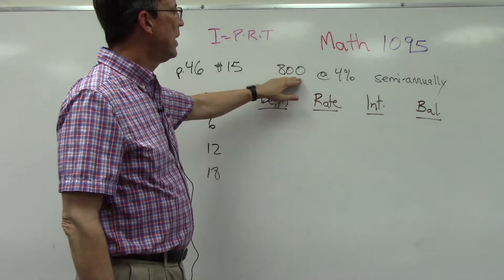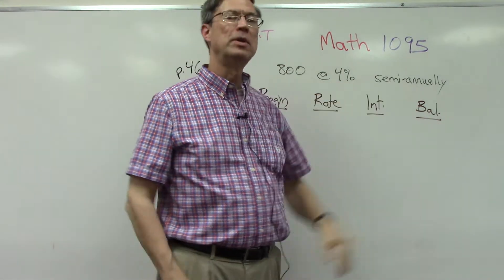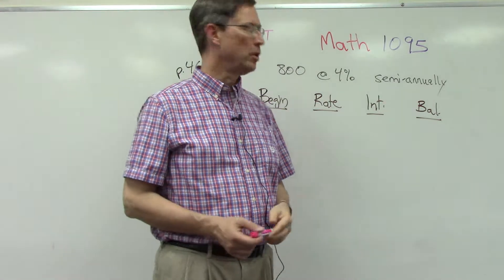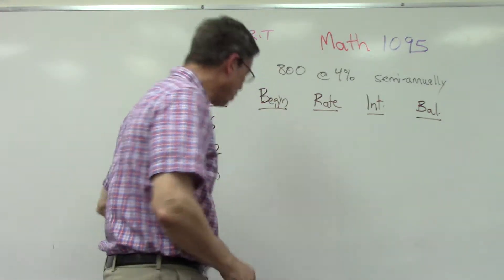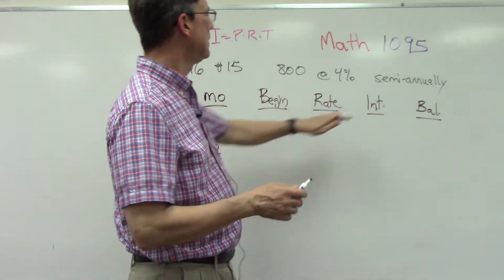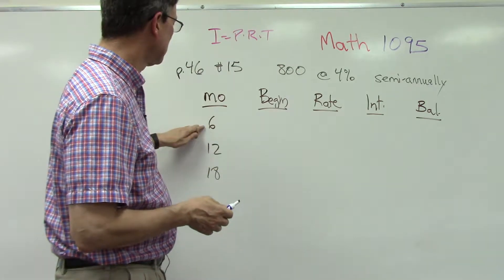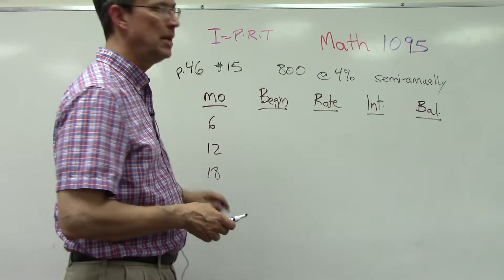We're going to deposit $800 at 4% interest and it's compounded semi-annually. If you're not familiar with that term semi-annually, you might be confused. Well don't be, because the term semi-annually just means twice a year, every six months. So that's why they have the sixth month, 12 month, 18th month - every six months.